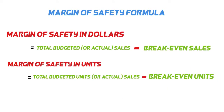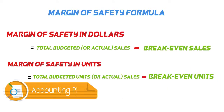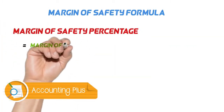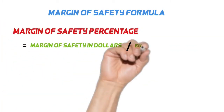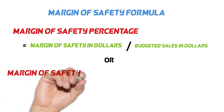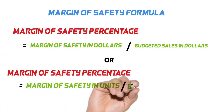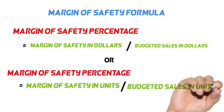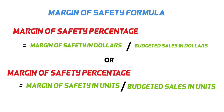The margin of safety percentage is a very important concept — you must note down this formula. If we divide margin of safety in dollars or units by total budgeted sales in dollars or units, we get a percentage. This percentage number is known as the margin of safety percentage.